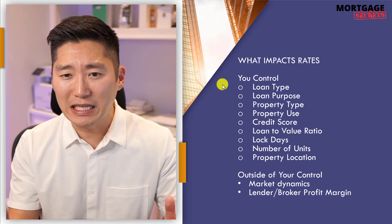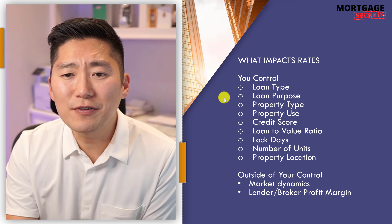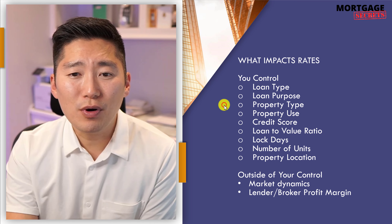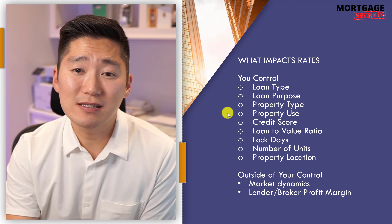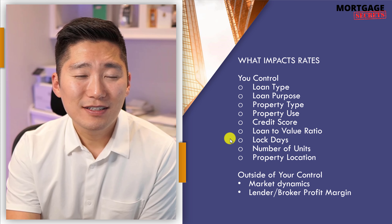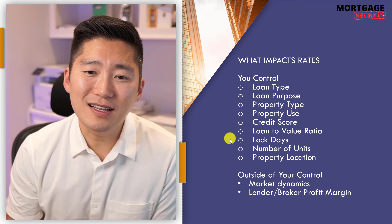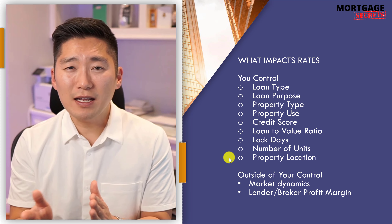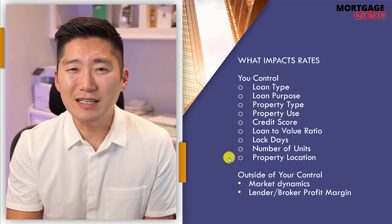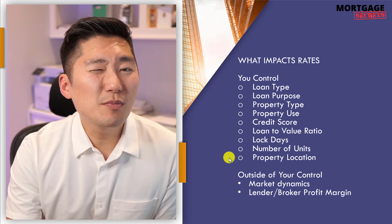For a conventional 30-year fixed loan: loan type is conventional; loan purpose is purchase, or if refinancing, a simple rate-and-term — no cash-out; property type is single family; property use is primary residence; credit score is anything over 760; loan-to-value ratio is anything under 60%; lock days — a 30-day lock is fine, 15 days isn't a huge improvement. Property location: keep the loan amount under $647,000, because even high-balance conventional has a slight hit. With LTV at 60%, any property location should be fine.